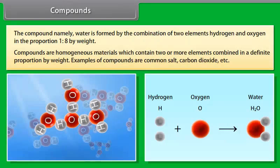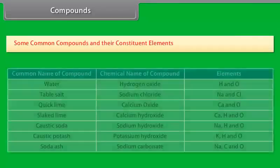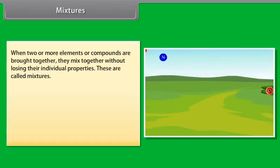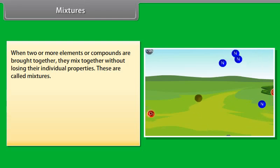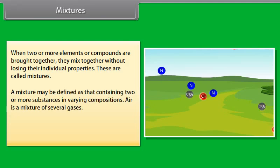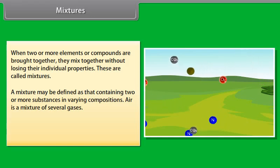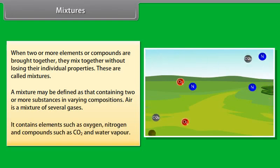An element cannot be broken down into simpler substances because its atoms are indivisible. When two elements combine, atoms are neither created nor destroyed, so the mass of the product is the same as that of the reactants. If atoms of element A combine with atoms of element B, the proportion of mass of the elements in the resulting compound molecule will be constant. If one atom of A combines with two atoms of B, the resulting compound molecule will always have A and B in a 1:2 ratio by mass. In a mixture, however, the atoms do not combine and they may be present in any proportion.